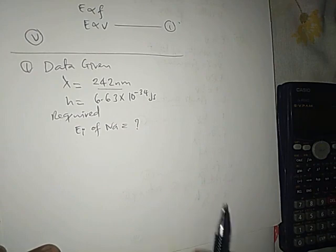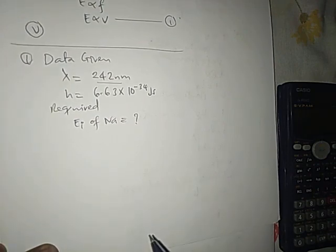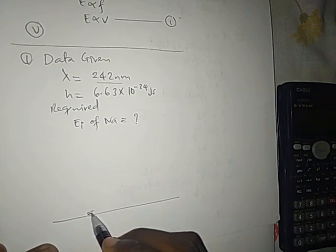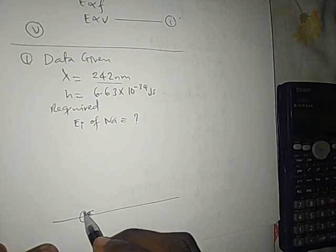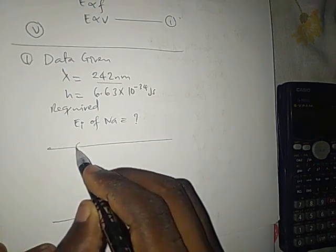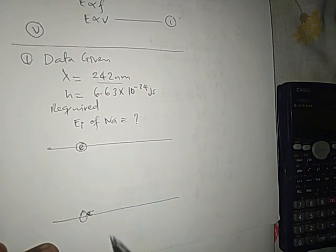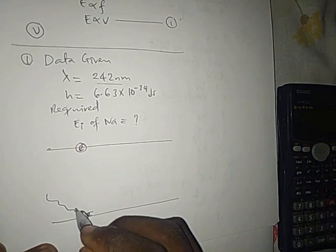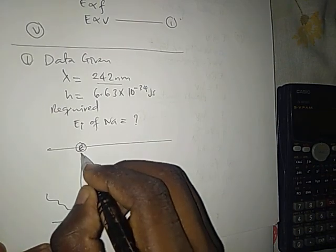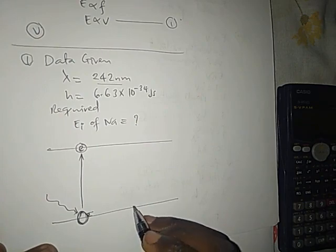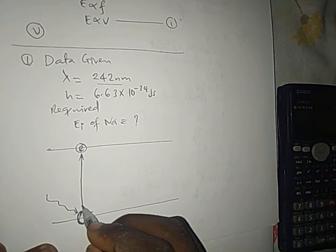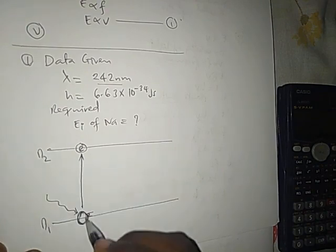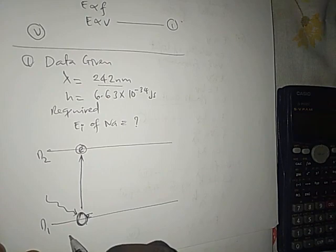Let me explain the concept of electron transition before proceeding. In electron transition we have two states: ground state and excited state. Let's say this is the position of an electron before it is excited. When this electron absorbs energy, it can jump from one energy level to another — from energy level N1 to energy level N2. This is according to the Bohr atomic model. Here the electron absorbs energy going up.